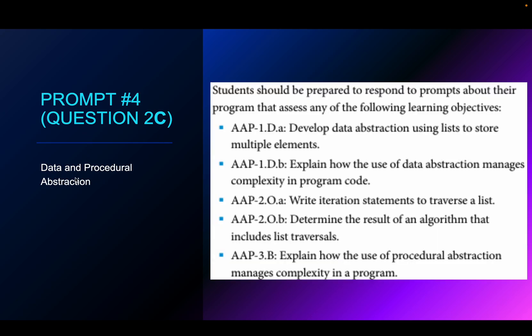Prompt four covers data and procedural abstraction. You should be able to develop data abstraction using lists to store multiple elements — explaining that by using a list or an array you are simplifying the code so you don't have to have a huge number of variables. Explain how the use of data abstraction manages complexity in program code. Using collection types like lists, arrays, or objects can help simplify the code, make it shorter, more condensed, and more efficient. You also need to be able to write iteration statements to traverse a list, going through a list based on the number of items and inspecting each item one at a time.